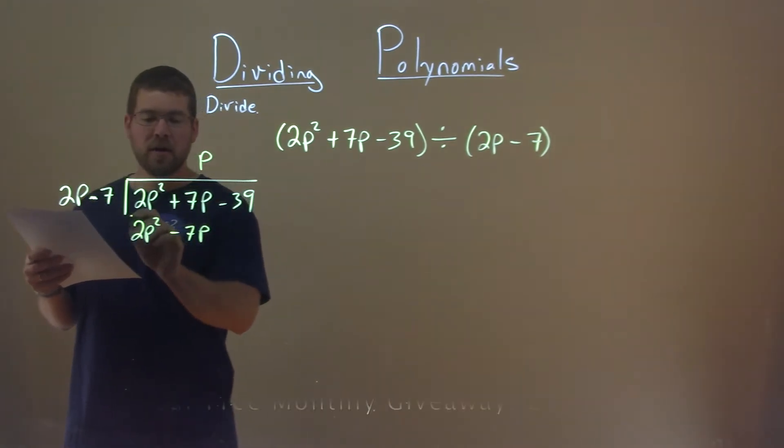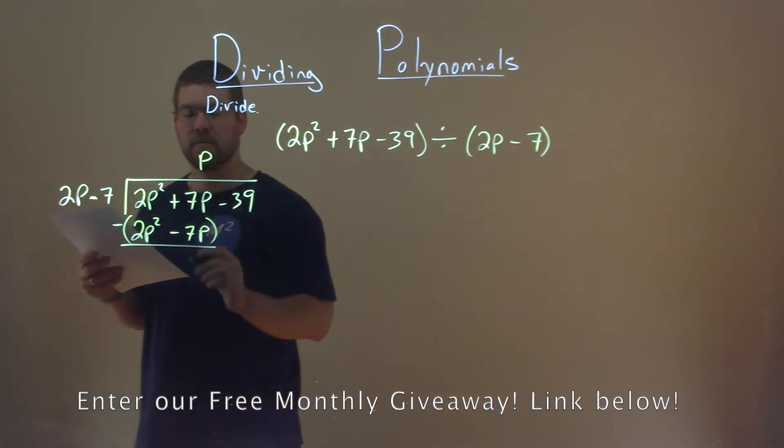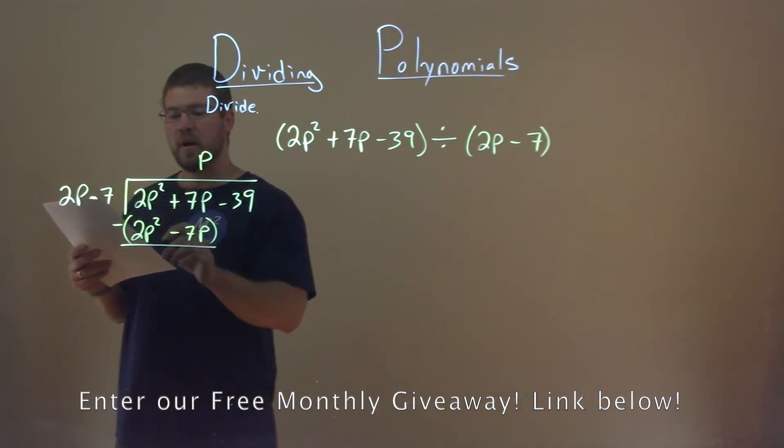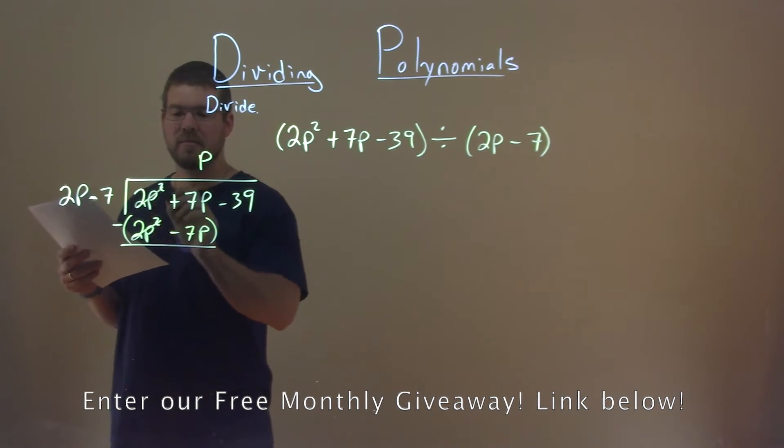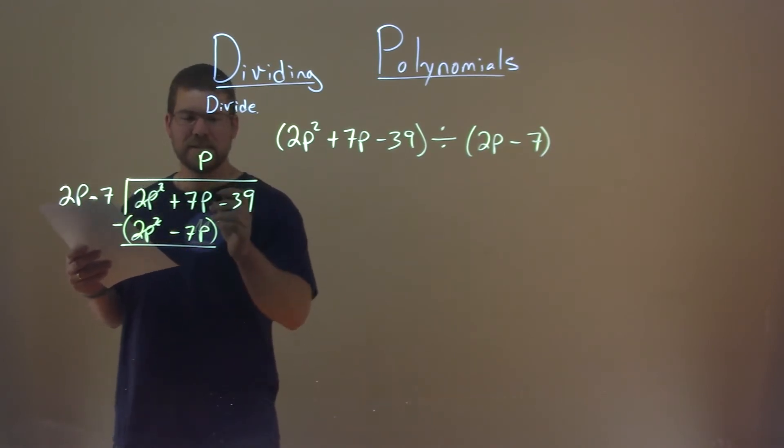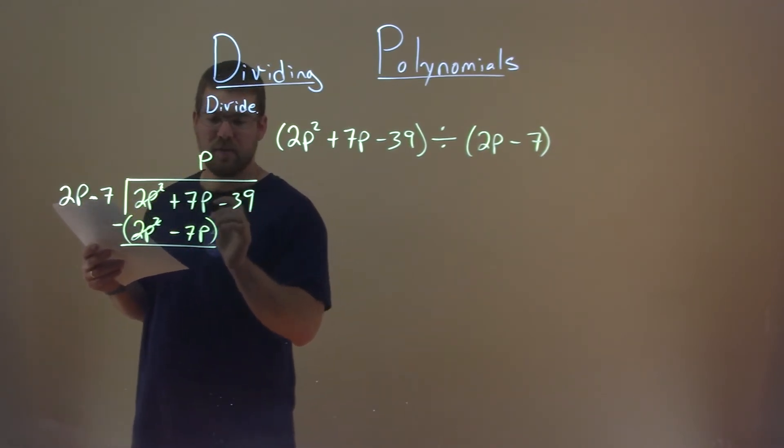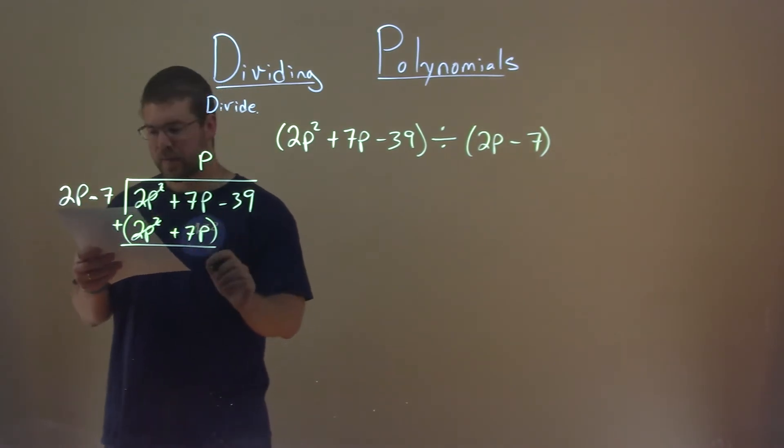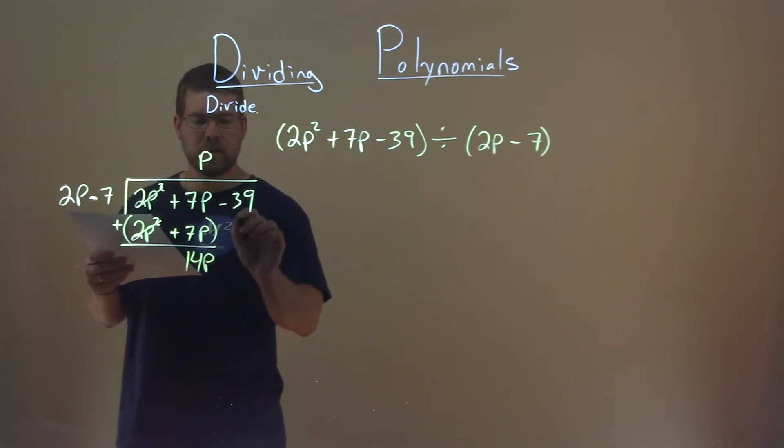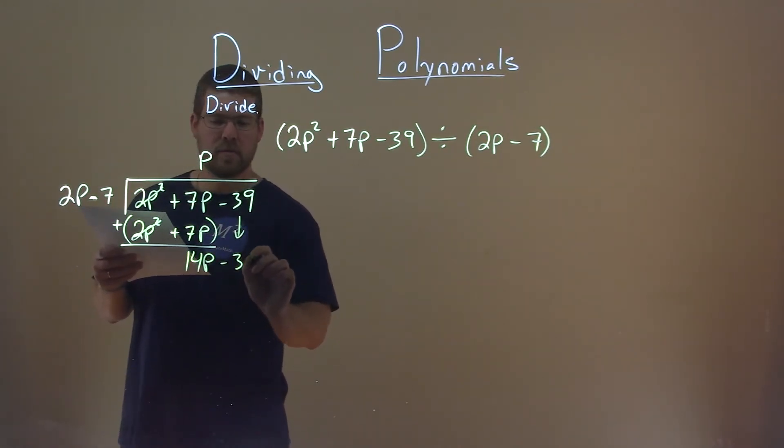We're now going to subtract that whole thing from what's up top. 2p squared minus 2p, well, or 2p squared is the same thing, they cancel. 7p, now be careful here, 7p minus a negative or plus a positive 7p is a 14p. We bring down the minus 39.